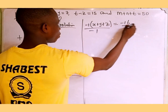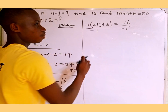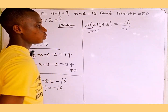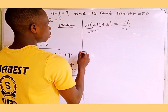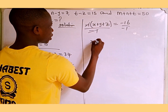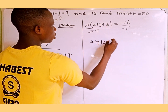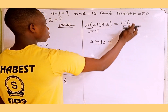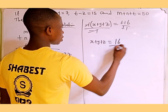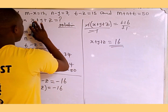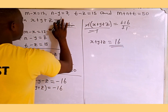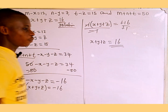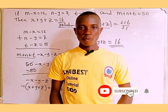We divide through by minus 1. On the left-hand side we are left with only x plus y plus z, and on the right-hand side minus divided by minus cancels, and 16 divided by 1 is 16. Therefore the value of x plus y plus z equals 16. Thanks for watching, and please follow and subscribe for more.